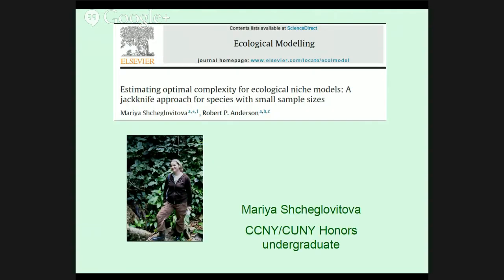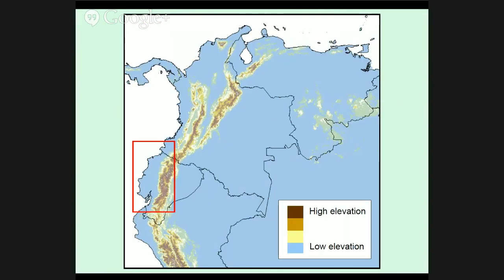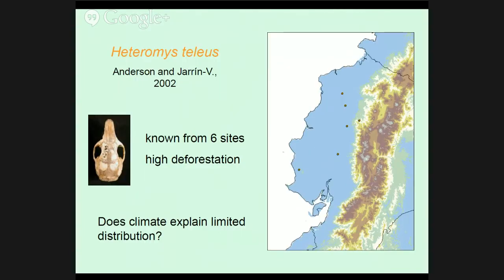Principles of the literature suggest that we should evaluate spatially independent data, vary model complexity, and select models based on either performance on withheld data or by information criteria. The first study is by Maria Yackulic, applying a jackknife approach for jackknifing occurrence localities — previously implemented by others for model evaluation, and she's applying it in the context of tuning for model complexity. Her species is found in Ecuador: Heteromys teleus, named a little over a decade ago, known only from six sites in an area of very high deforestation. The question is, does climate explain the species' limited distribution?